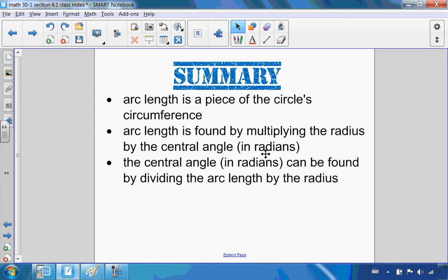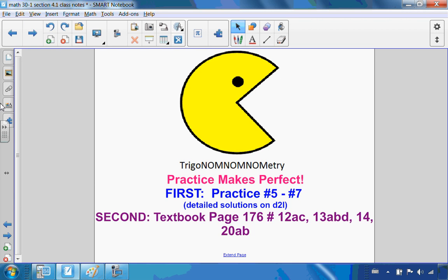To summarize, arc length is a piece of the circle's circumference. It's found by multiplying the radius by the central angle in radians. The central angle in radians can be found by dividing the arc length by the radius. That's the formula you will have on your formula sheet. Drawing these arc lengths makes me think of my favorite childhood video game, Pac-Man. This concludes this lesson on trigonometry.